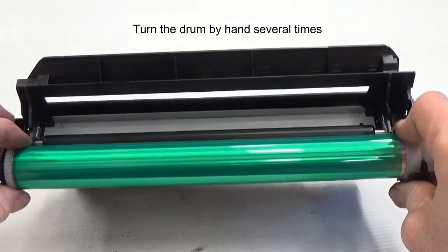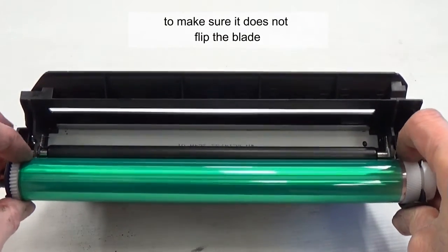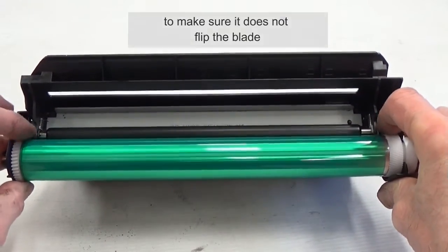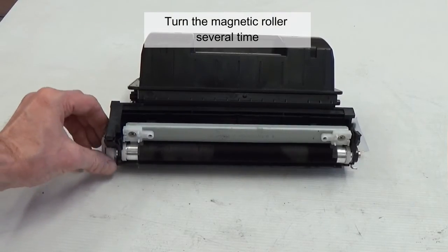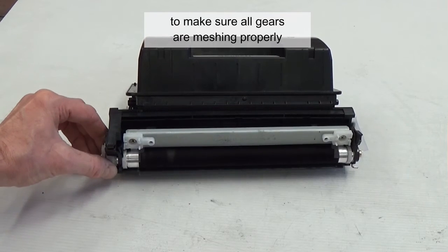Turn the drum by hand several times to make sure it doesn't flip the blade. Turn the magnetic roller several times to make sure all gears are meshing properly.